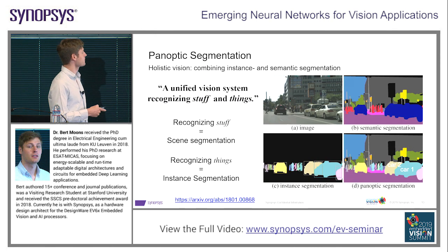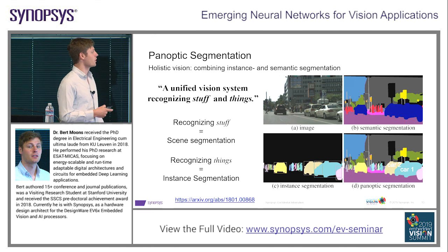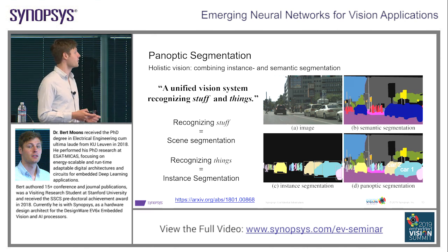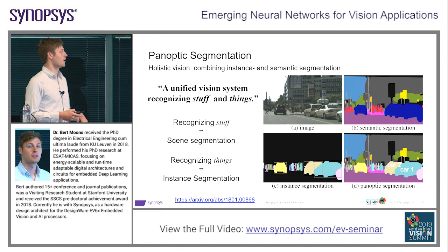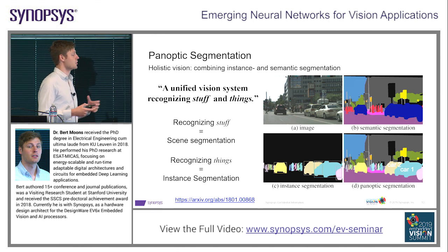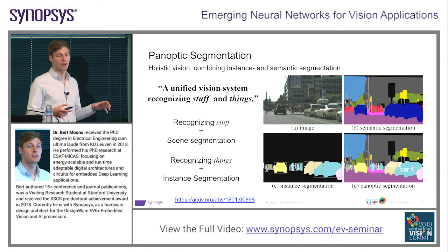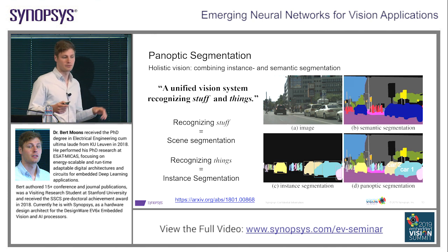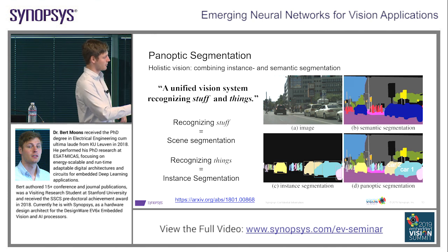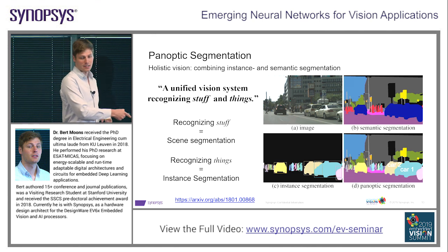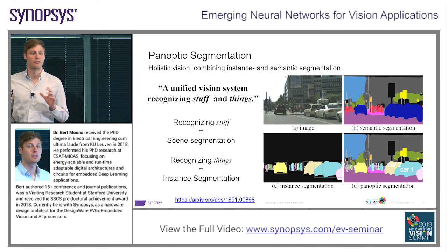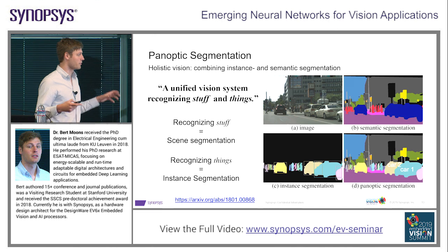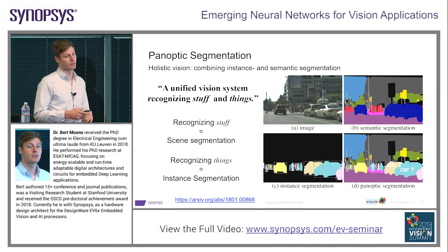If you look at panoptic vision, a synonym for this term is holistic vision. What we're looking at here is basically a unification of a number of vision tasks that were split before. An example of this is semantic segmentation and instance segmentation — those were tasks that were treated differently before. In panoptic vision, you basically merge them together.